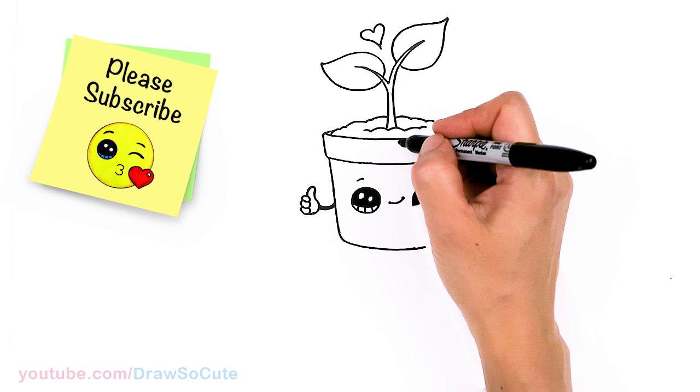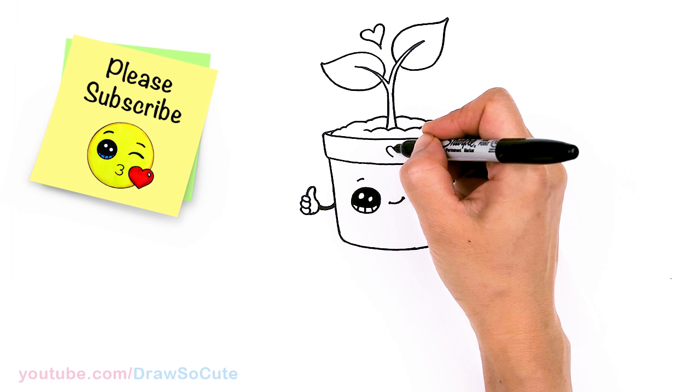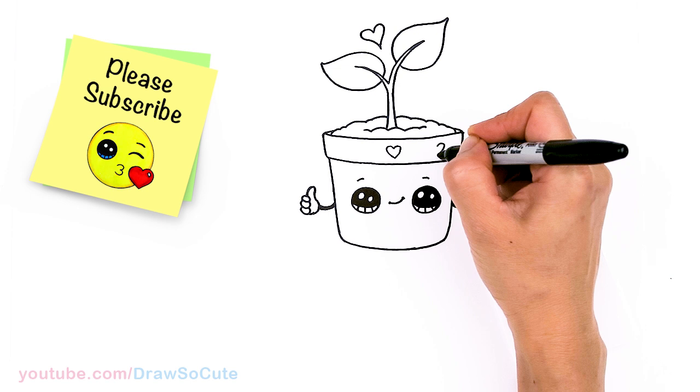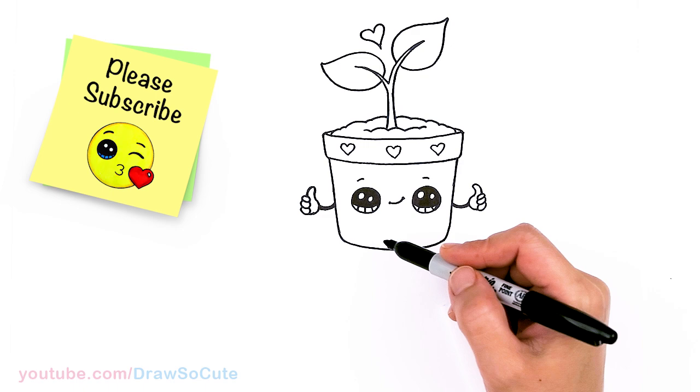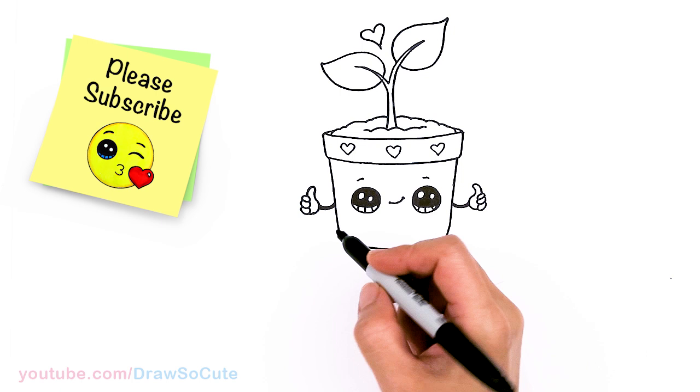And then let's see. Oh let's decorate our pot. So we're just going to put three hearts right here. One in the center. And another one here. And one more. So the drawing part is pretty much done now to write the pun which is believe in yourself.